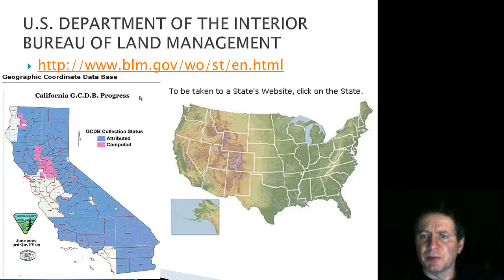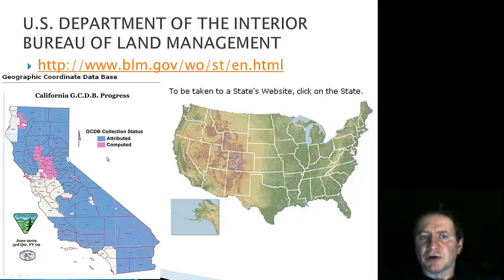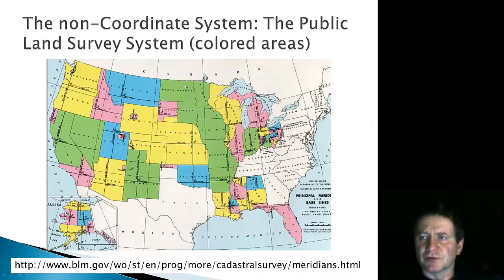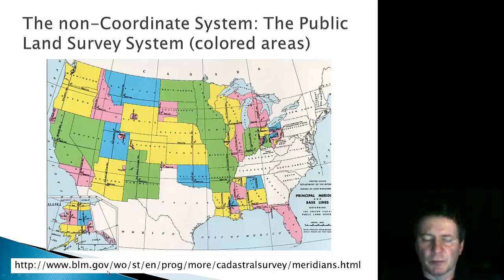Here's a reference to the Bureau of Land Management. You can click on a state and some states have information about geographic base data accumulated for different states, with each state working on this in its own way. The non-coordinate system — the Public Land Survey System, or PLSS — was established at a later time. These are the coordinate systems, and these are the public land survey systems, with another reference to the Bureau of Land Management.